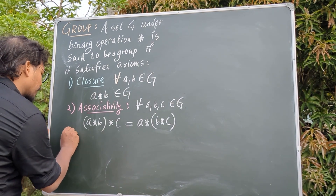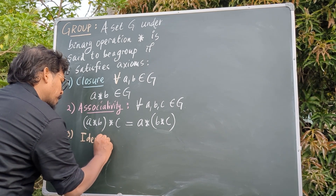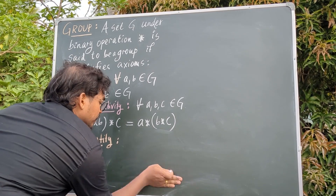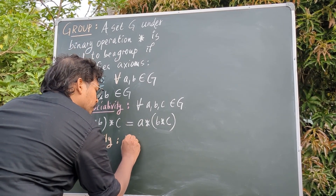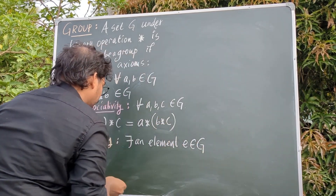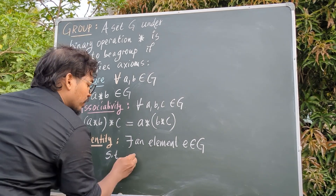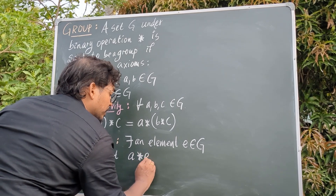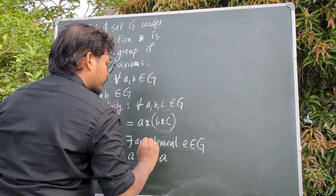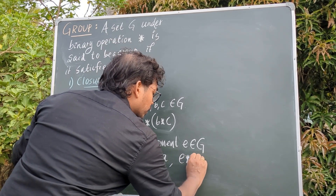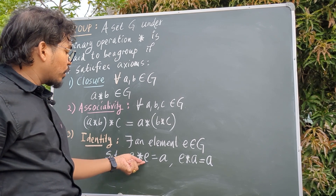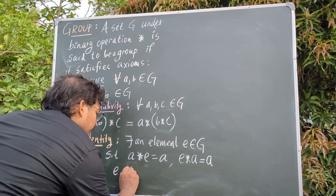The third axiom is the existence of identity. There exists an element E in the set G such that, if you take any element A and combine it with E, then E will not change the identity of element A — it will give A itself. Doing it the other way also gives A. So E does not change the identity of the element you are operating with. We say E is the identity element. A star E equals A, and E star A also equals A, for all A in the set G.